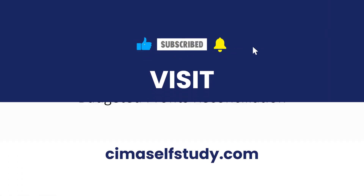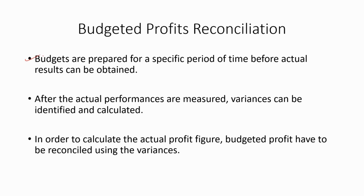In this video, I am going to discuss about budgeted profits reconciliation. Budgets are prepared for a specific period of time before actual results can be obtained. We discussed about how the budgets are prepared in early videos. After the actual performance is measured, variances can be identified and calculated. We also discussed about variance analysis in greater detail in early videos. In order to calculate the actual profit figure, budgeted profit has to be reconciled using the variances.